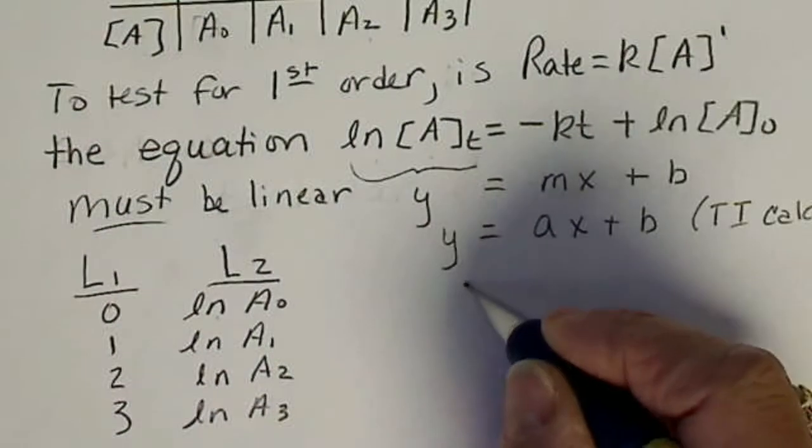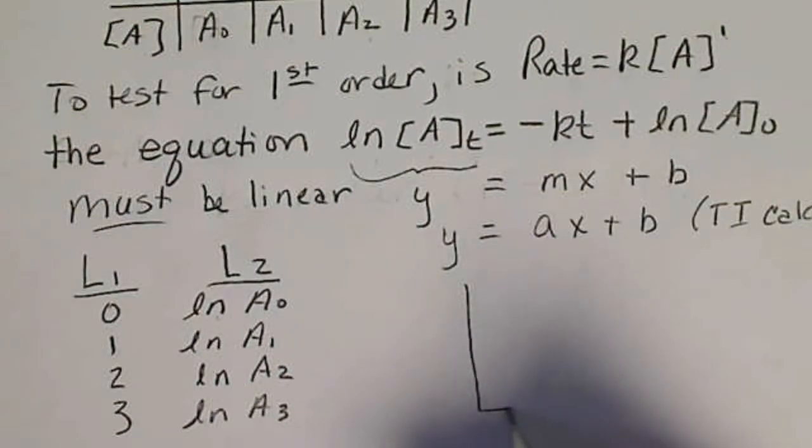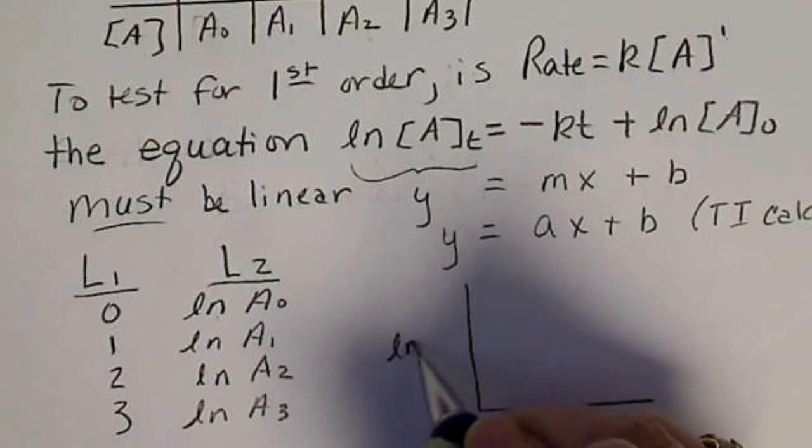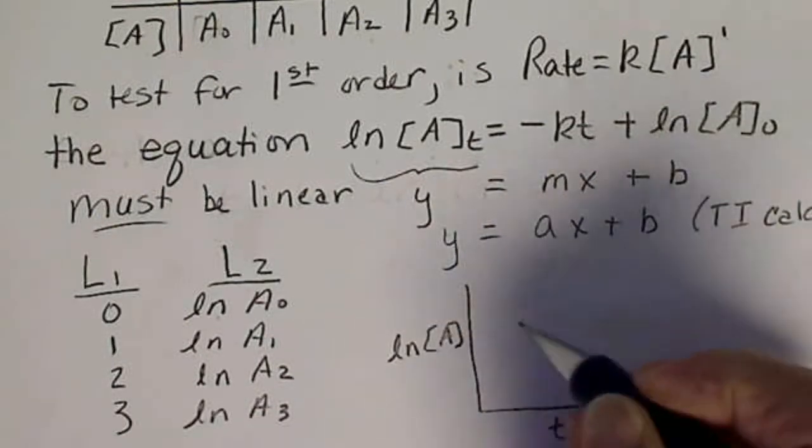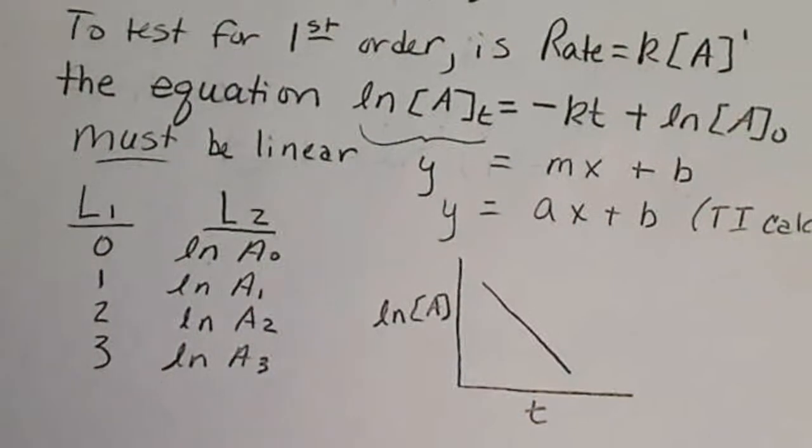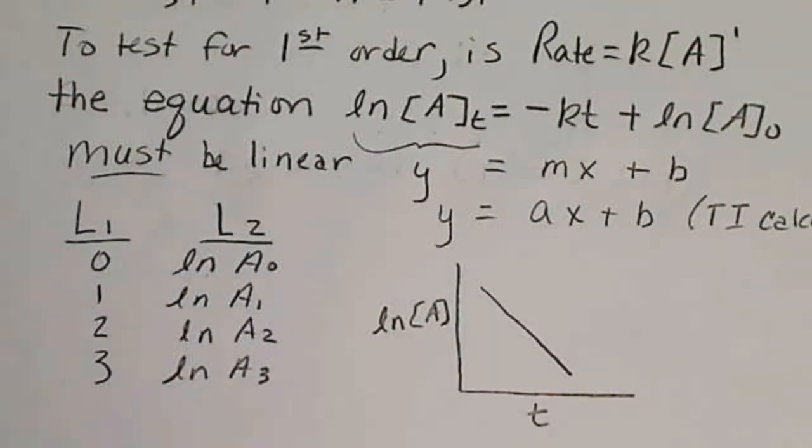If we could look at the graph, again the natural log of the concentration versus time would end up being linear if the data was indeed first-order.